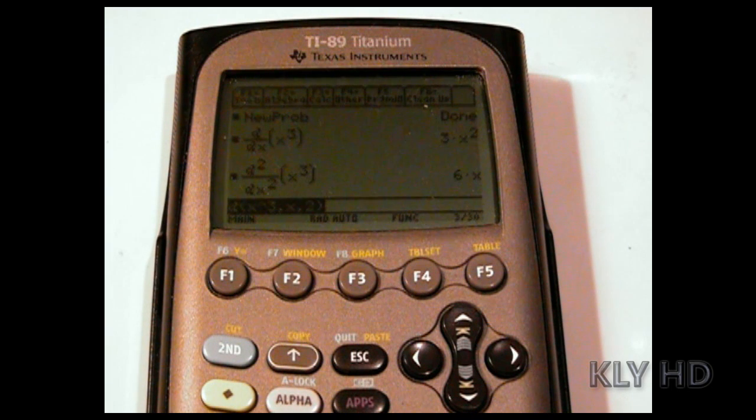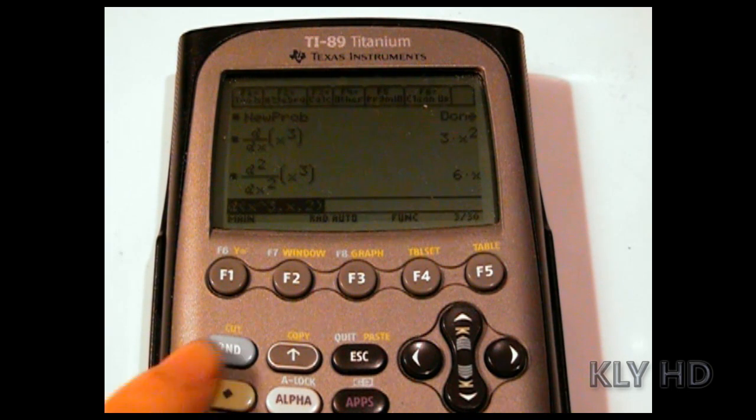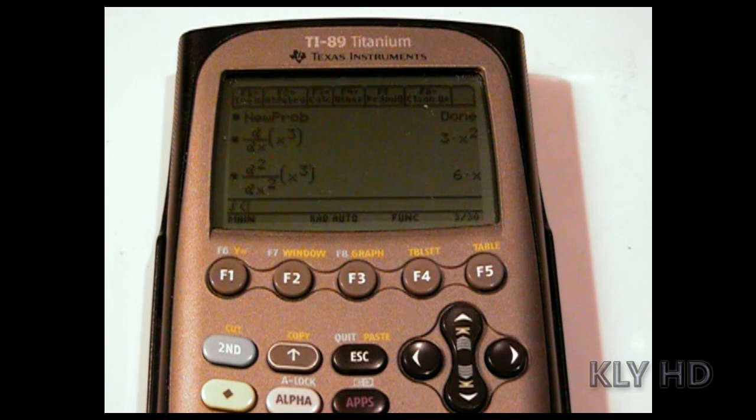To find the integral, you use the same process as finding a derivative, except you press 2nd and the 7th key. To find definite integrals, you add a comma a comma b, integrating from a to b. I will use the integral of x cubed from 1 to 2.